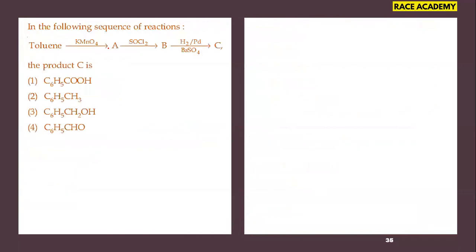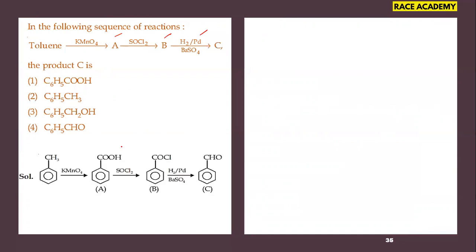In a sequence of reactions: toluene is oxidized by KMnO₄ to give compound A (a carboxylic acid — benzoic acid), which reacts with thionyl chloride to give compound B (acid chloride). B is then treated with H₂/Pd supported on BaSO₄ — a Rosenmund reduction — to give compound C. So C is benzaldehyde (C₆H₅CHO). The fourth option is the right answer.